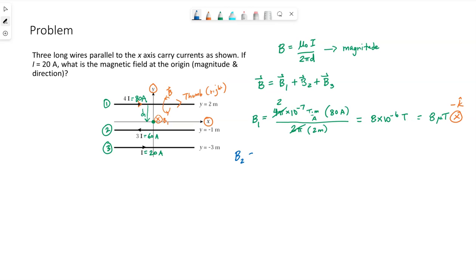Wire two, same equation. Different current and a different distance. Different distance, this wire is a distance of one meter away from the origin. We don't put in negative one. We just want the distance. The fact that the wire's at negative one is going to come into play in determining the direction of the field. But this equation in of itself, we just want the distance.